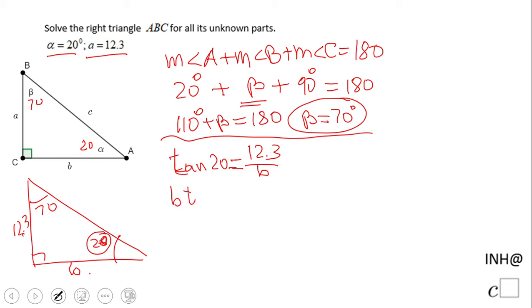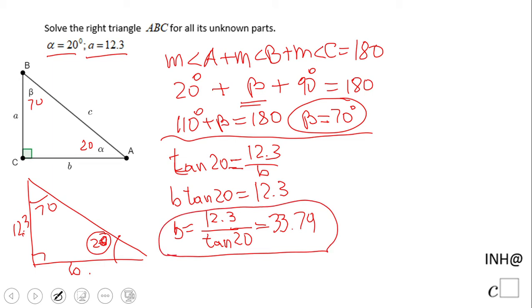Tangent of 20 degrees equals 12.3 over b. If we do the math, we cross multiply and get b times tangent of 20 equals 12.3. So b will be 12.3 over tangent of 20, which is a good exact answer. For an approximation, grab a calculator in degree mode and you should get 33.79, rounded to the nearest hundredth.